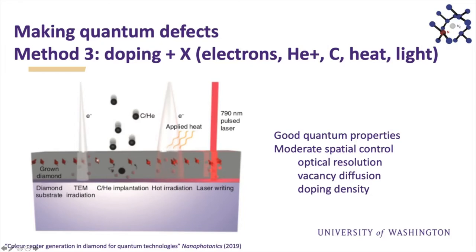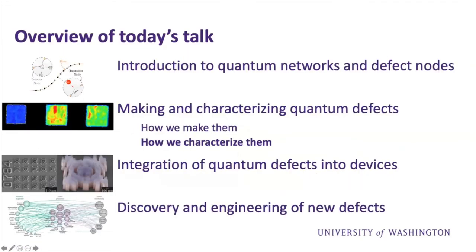Another promising approach combines both methods: doping just a thin layer to keep NV centers close to the surface, then using a separate step to activate or create vacancies — irradiating with electrons, implanting with carbon or helium, or applying localized laser heat. These have very good quantum properties with moderate spatial control, limited by vacancy diffusion and doping density.